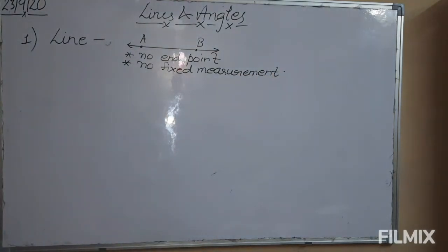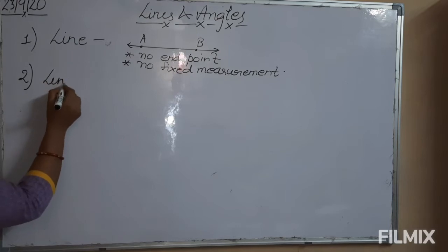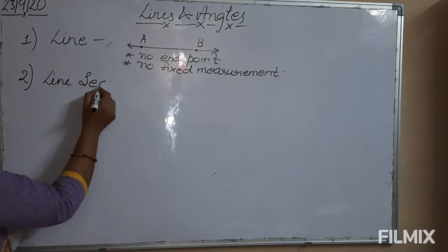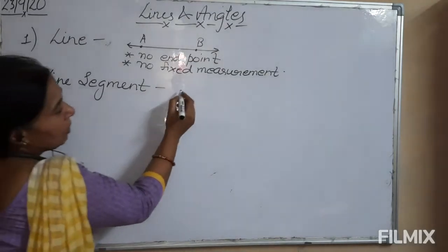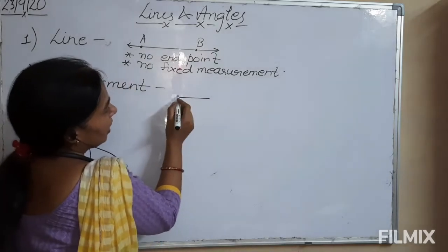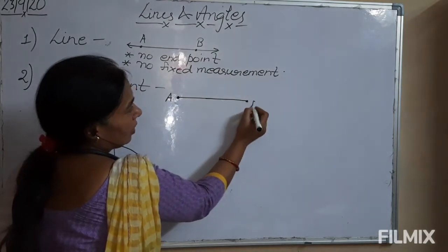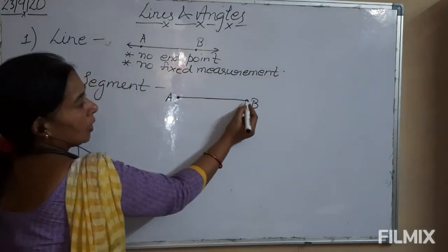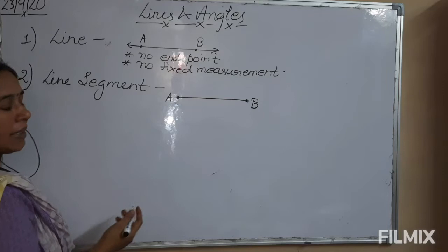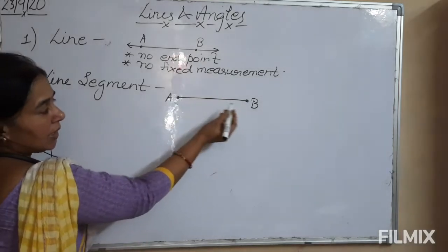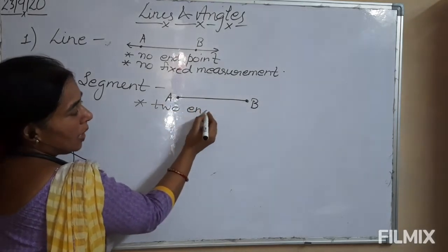Next topic is line segment. As by the diagram, a line segment can be drawn with one point A and second point B. It has two end points — first is A, second is B. Its measurement is fixed and it has two end points.